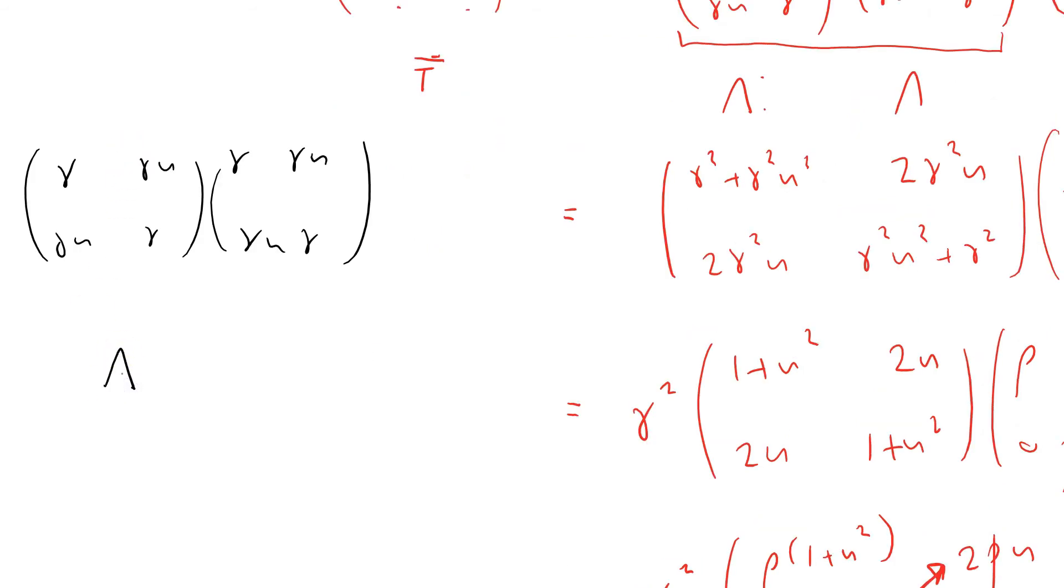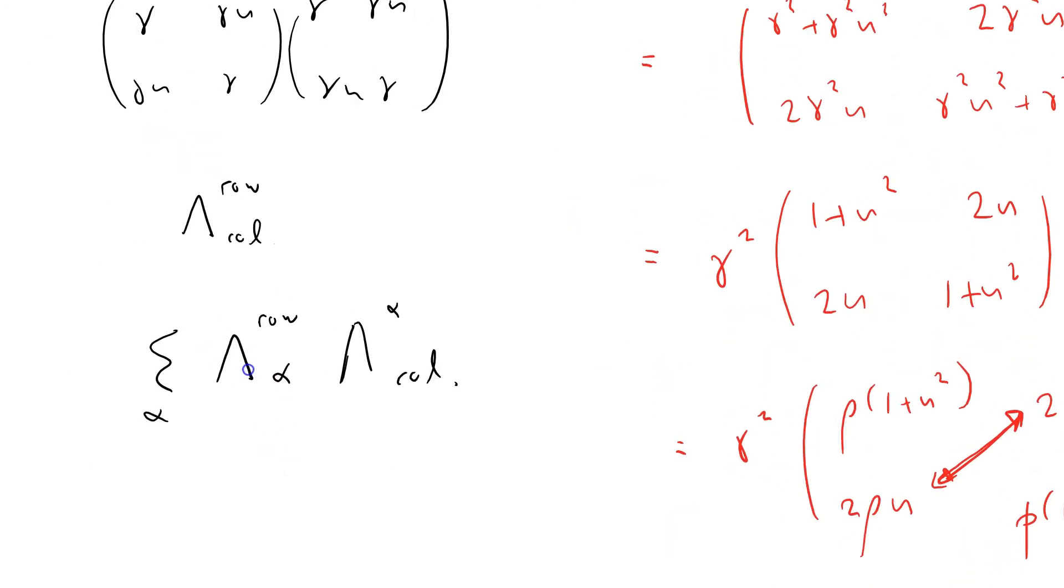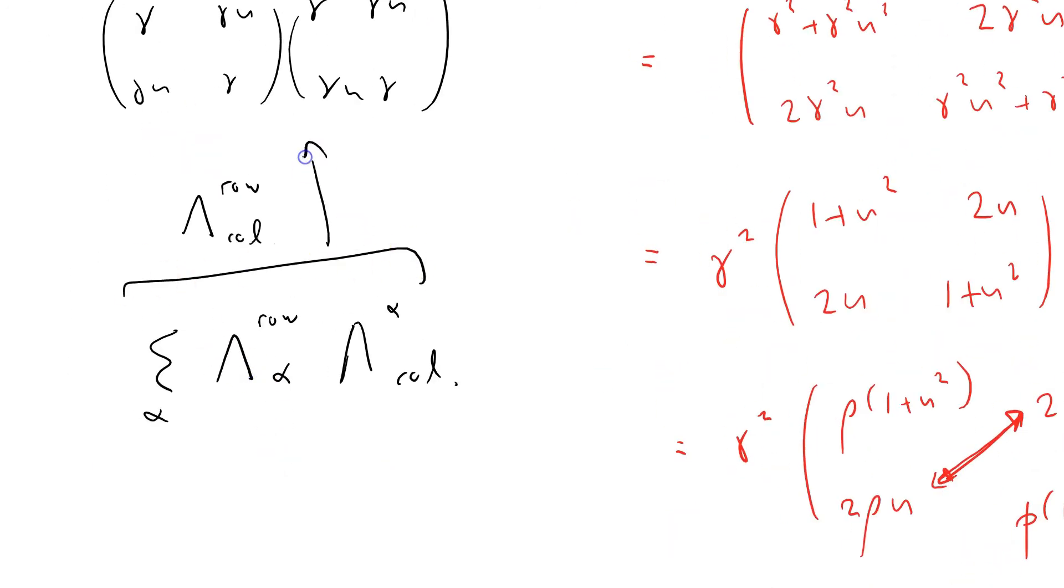Well, let me just write it out. If I write out row indices and then column indices down there, we've got row contracted with an index here, which I'm summing over, alpha and then the column. So that is the representation of this matrix product here, because I'm contracting on the columns of the first matrix with the rows of the second, because I'm doing rows with columns like that.